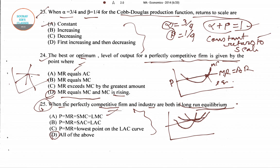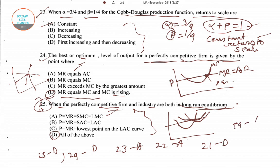To recap the answers: question 25 — D, question 24 — D, question 23 — A, question 22 — A, question 21 — D, question 19 — A, question 18 — A, question 17 — C. In today's video we solved eight questions in total.